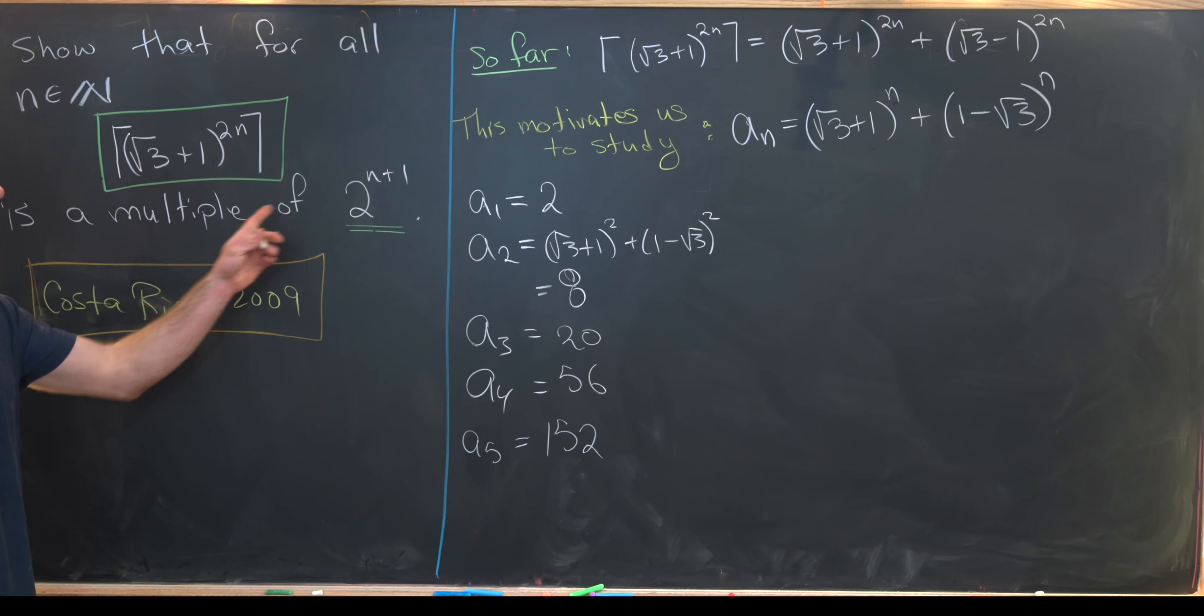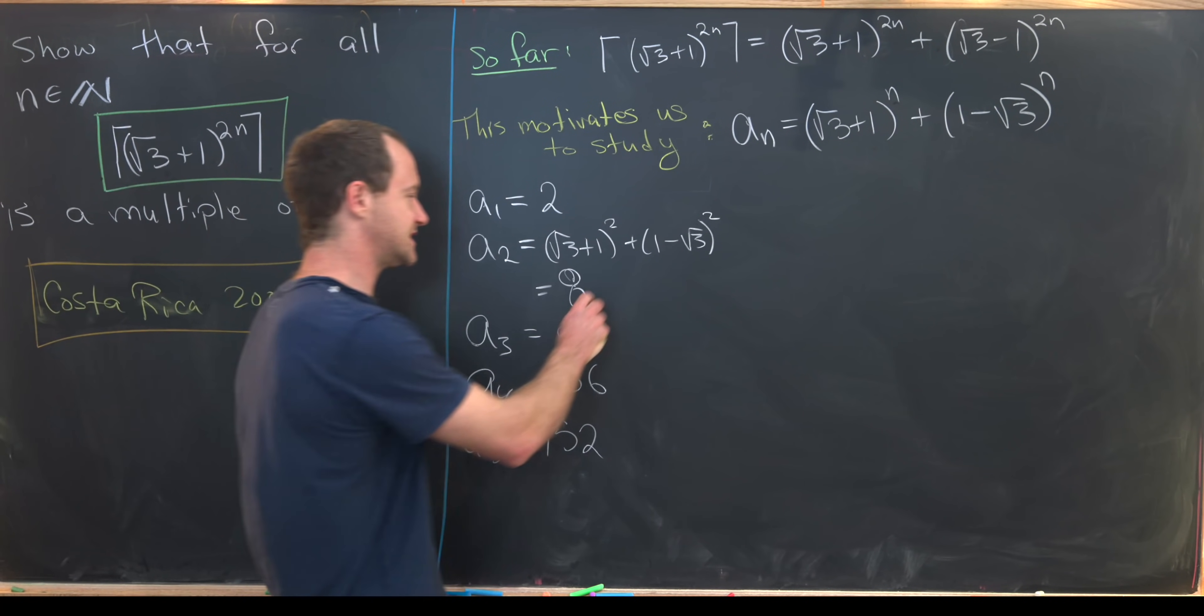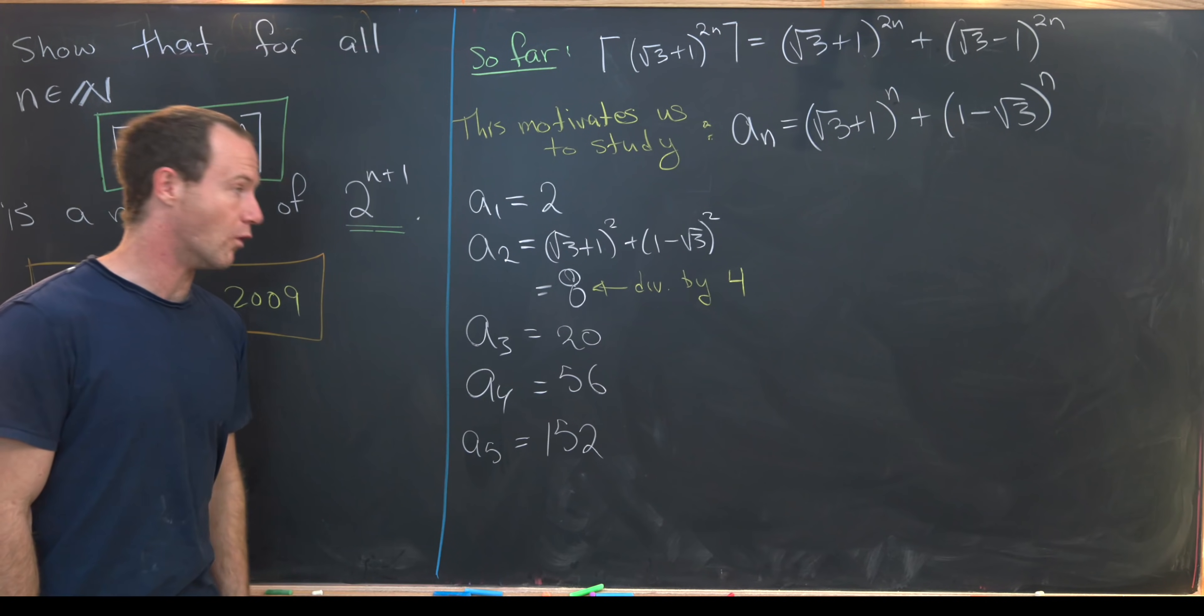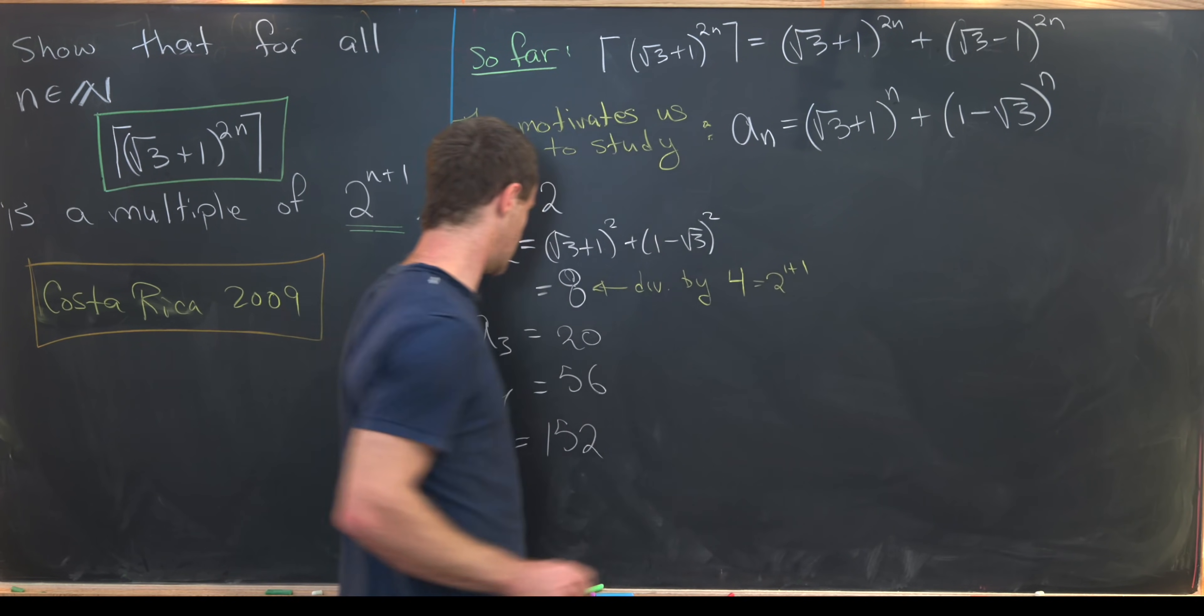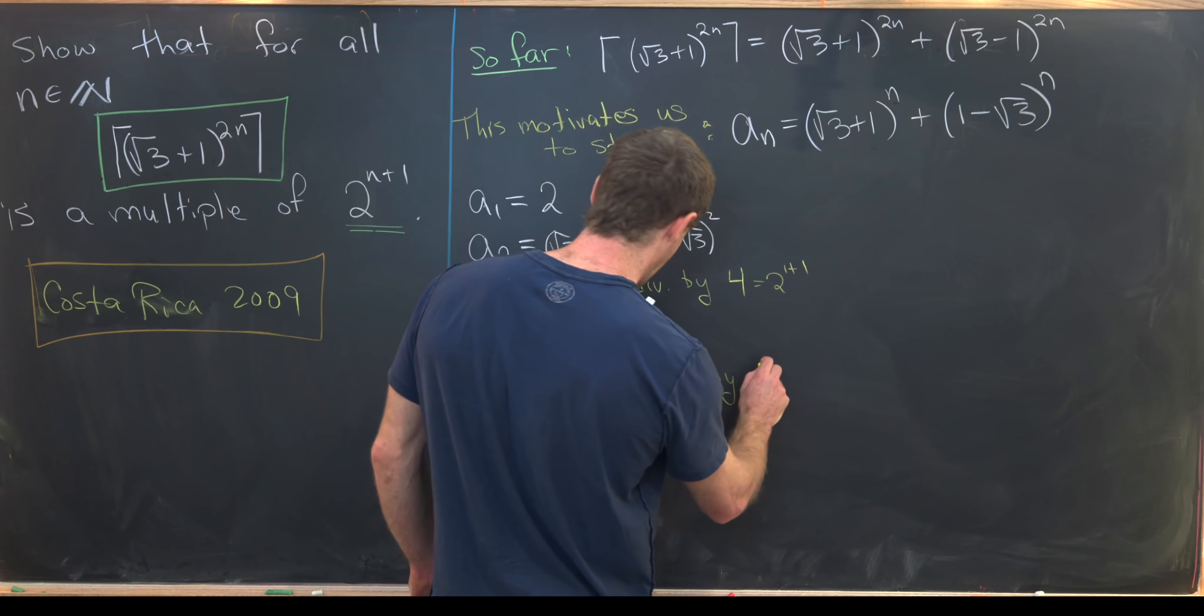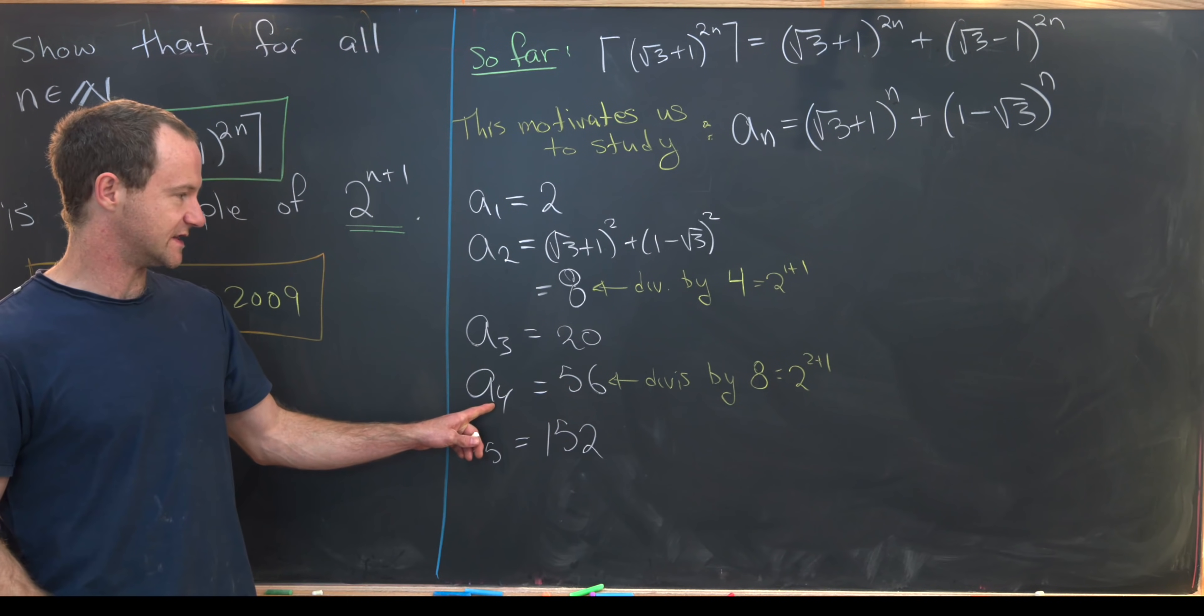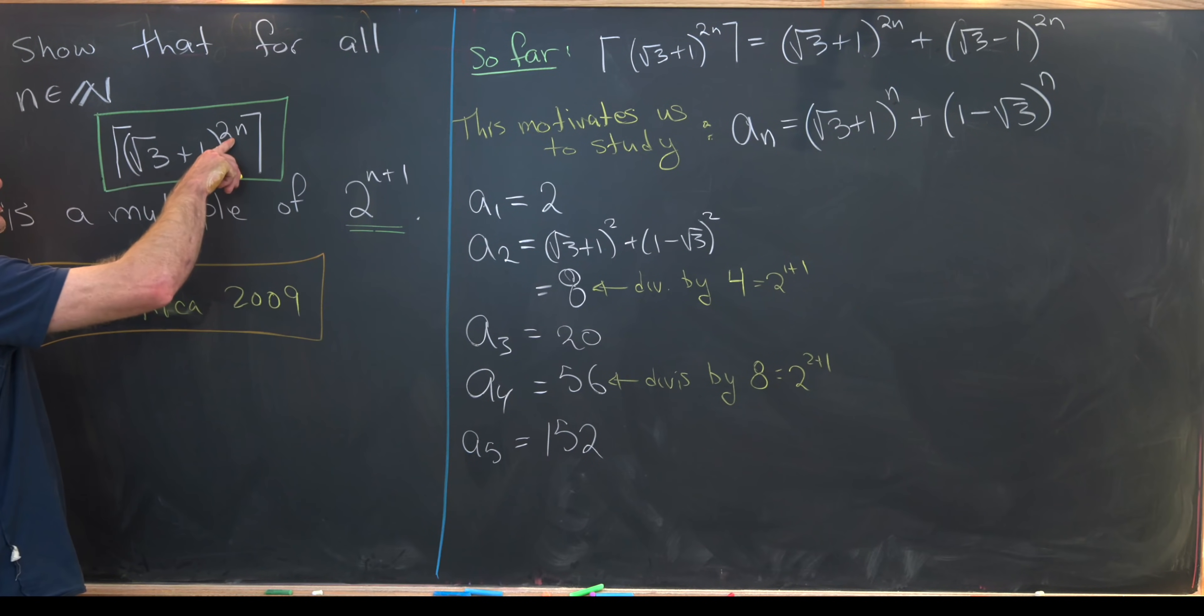So let's notice our goal just to show that the even terms are divisible by 2 to the n plus 1. Well, notice that this guy right here is most definitely divisible by 4. In this case, the n in the 2 to the n would be 1 here. So we're having 2 to the 1 plus 1. So let's maybe write that out, 2 to the 1 plus 1. And then this guy right here is divisible by 8. Well, that's clear because it's 8 times 7. And that is 2 to the 2 plus 1. Where here, our n is being played by 2 because we've got a sub 4, which is 2 times 2.